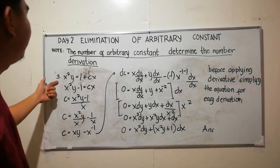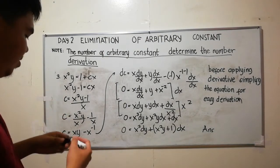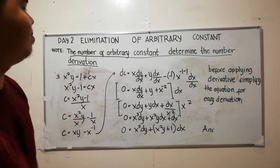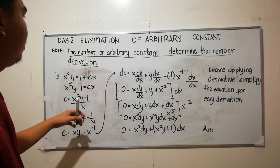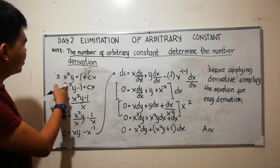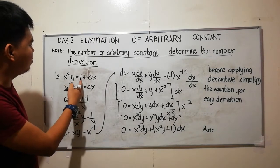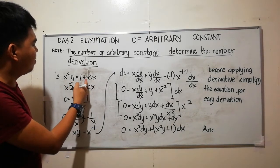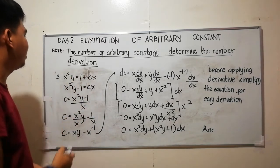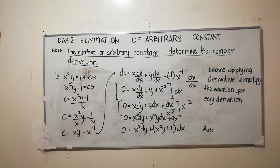Good morning class. We are now on problem number three: elimination of arbitrary constants. We have the equation x squared y is equal to 1 plus c over 1 plus cx, and we need to work with this equation.